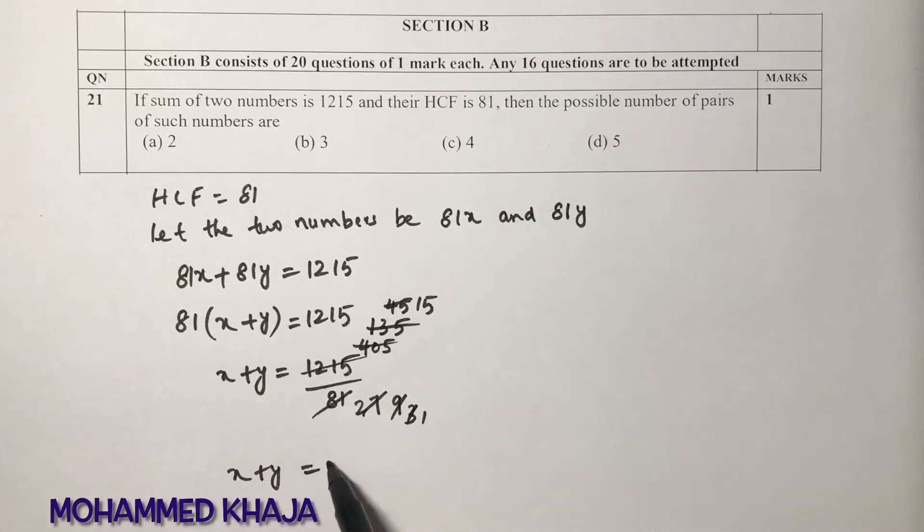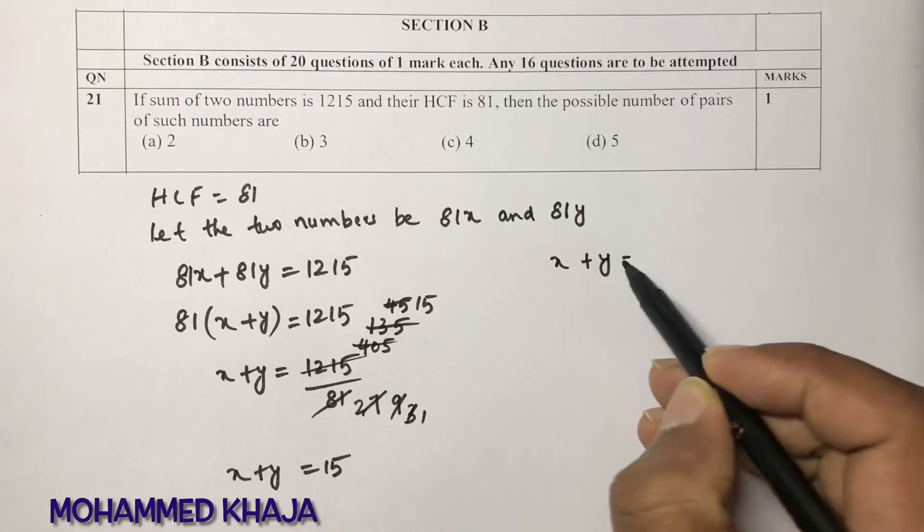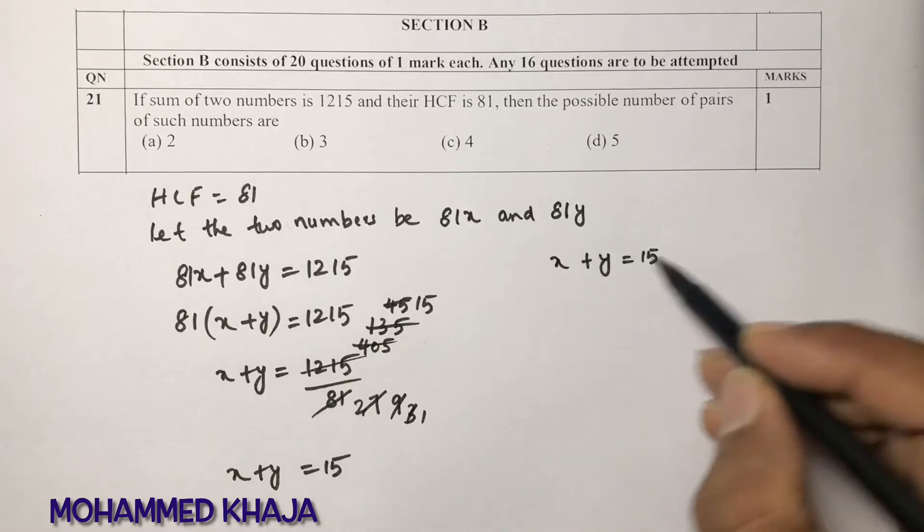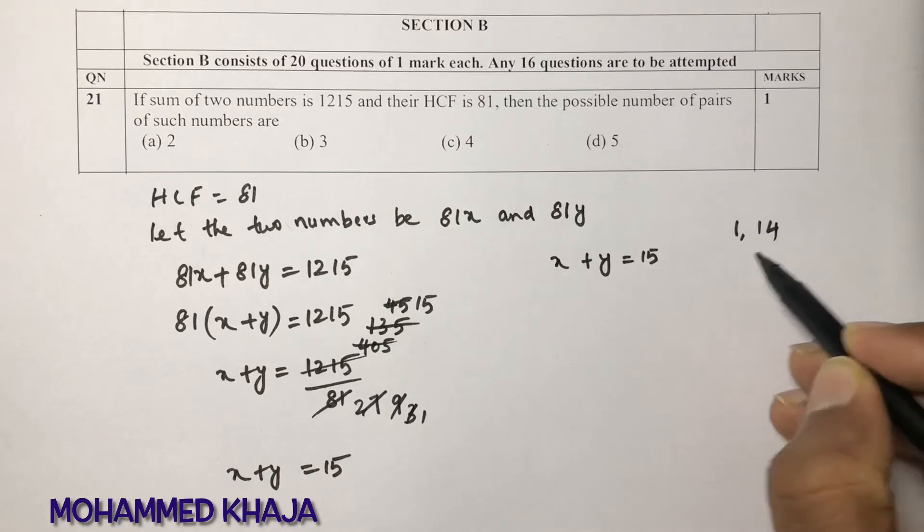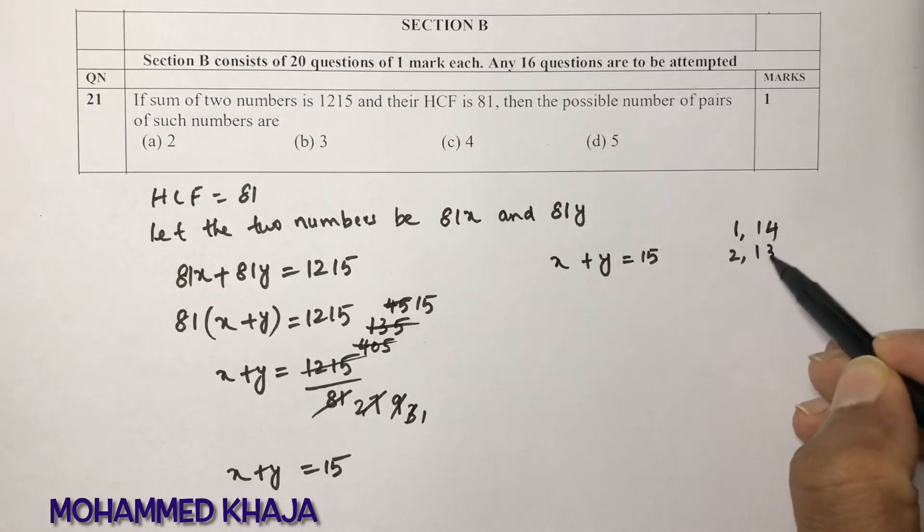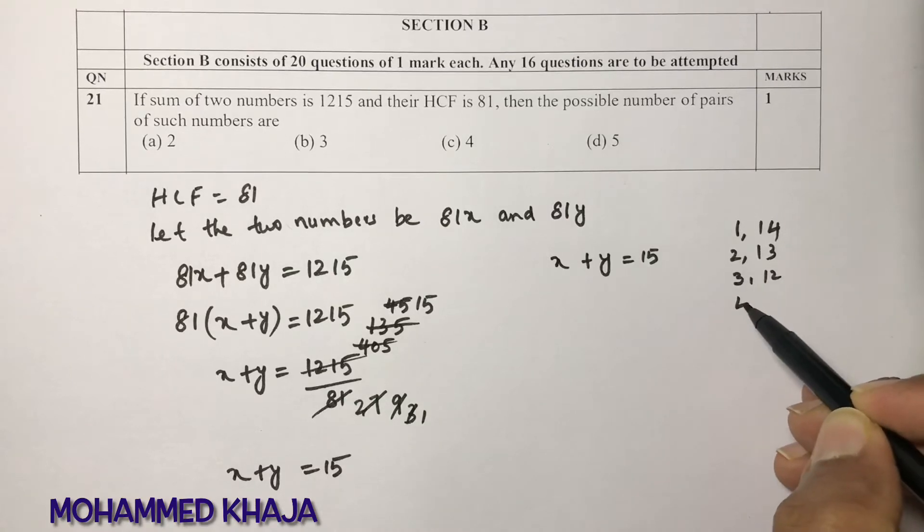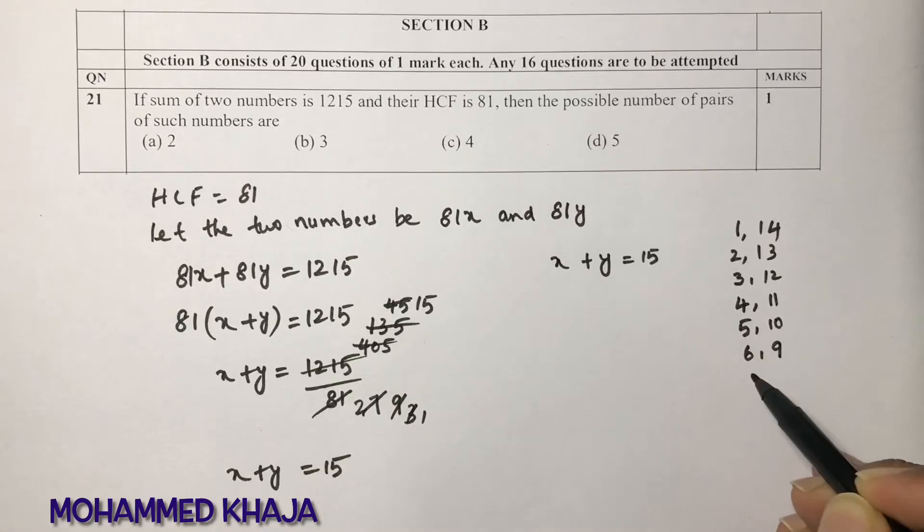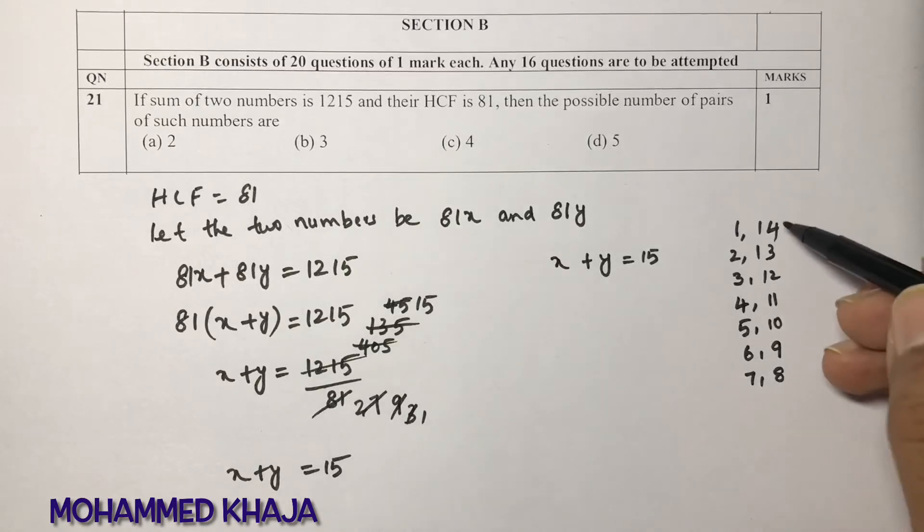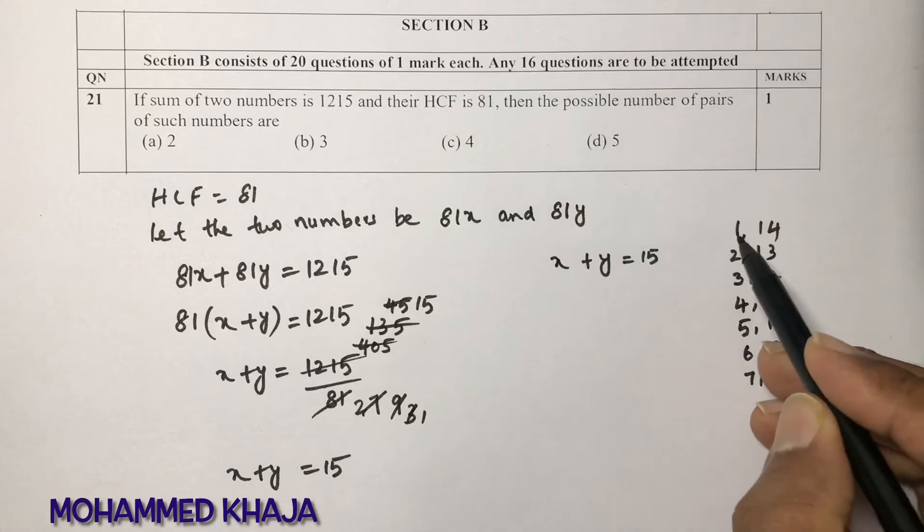Now for x and y values, we need to tell how many pairs are possible. So first find all the pairs where if you add you'll get 15: 1 and 14, 2 and 13, 3 and 12, 4 and 11, 5 and 10, 6 and 9, 7 and 8. Then 8 and 7 reverse. So these are all the numbers.